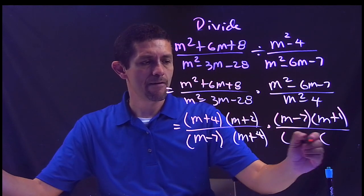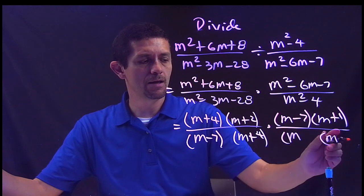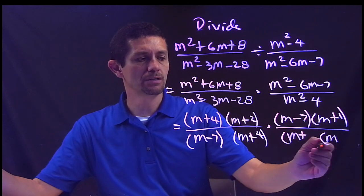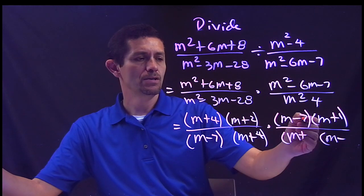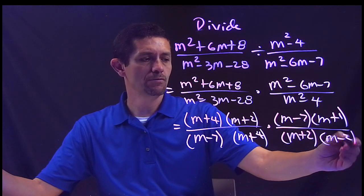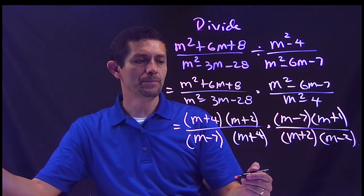Last one, difference of squares: M and M, difference of squares one positive one negative, square root of 4 is 2, 2. All right, so that's how you factor difference of squares.